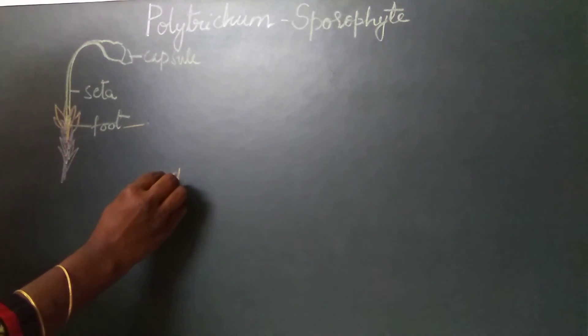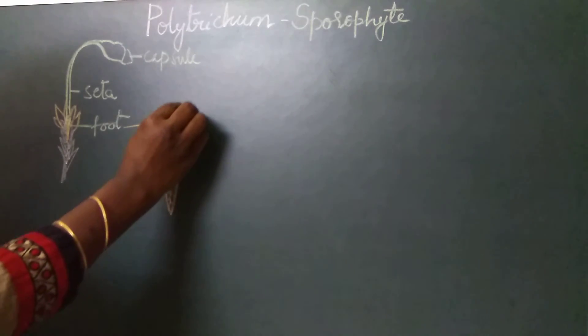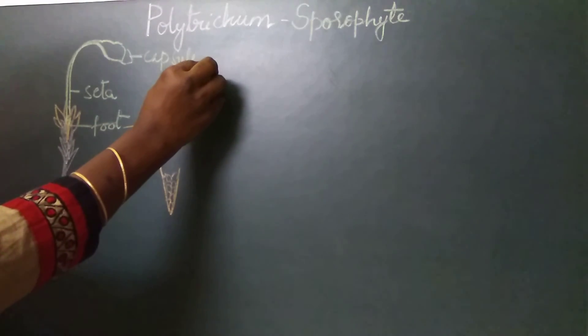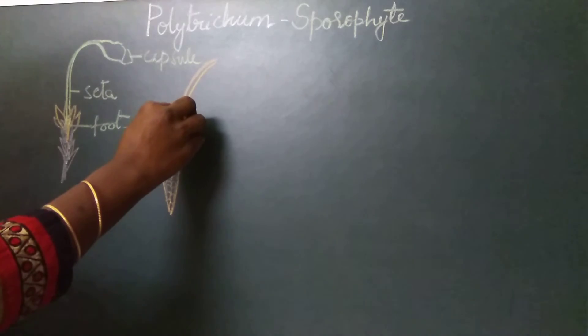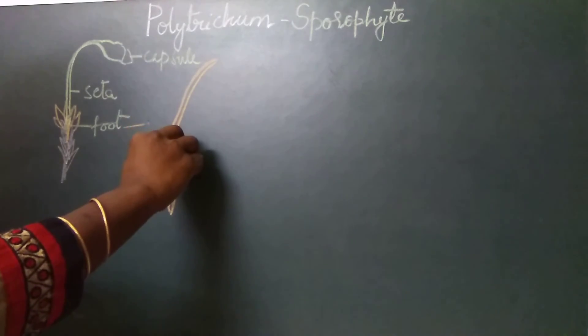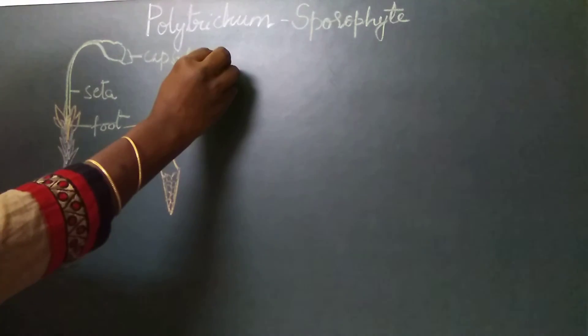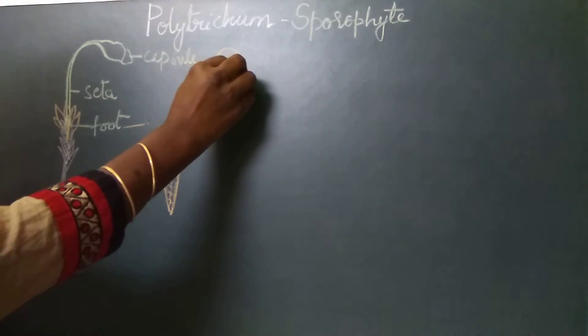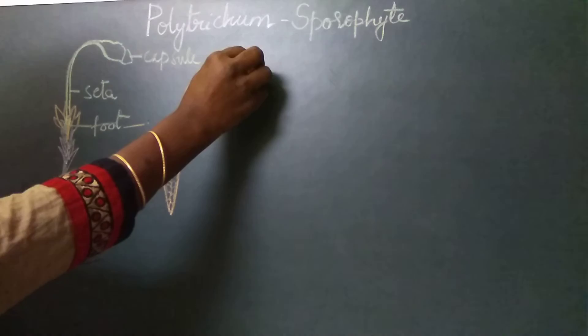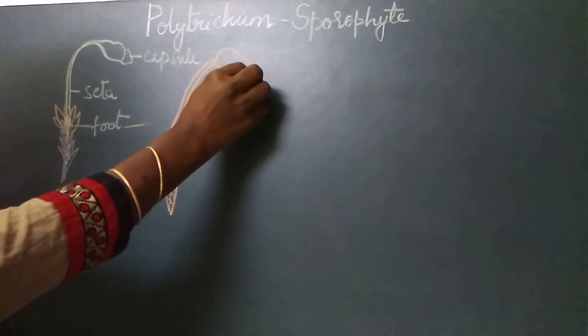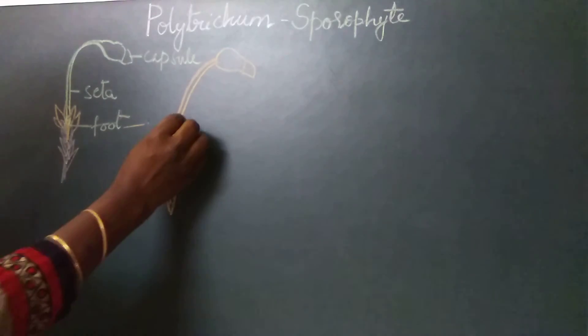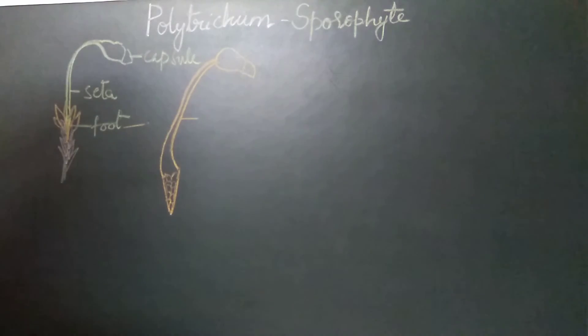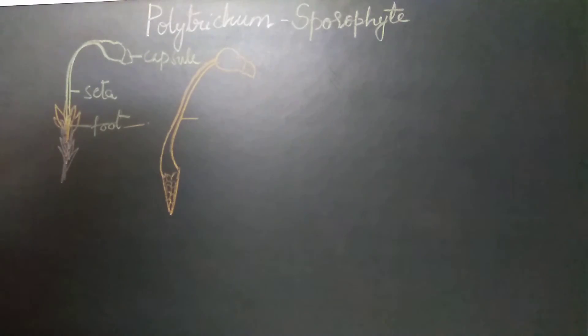Above the foot we find a long slender seta. The seta carries the capsule to a distance away from the foot region. The length of the seta is different in different species of Polytrichum.